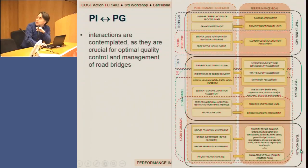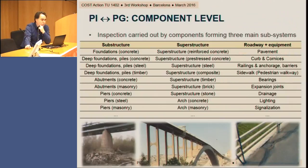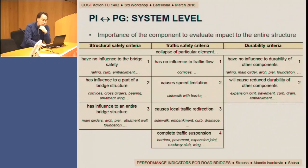At the component level, inspections are mainly carried out by components formed by three main subsystems: the substructure, the superstructure, and the roadway and equipment. At the system level, the importance of the component relates to its impact on the entire structure, assessed mainly through three criteria: structural safety, traffic safety, and durability.